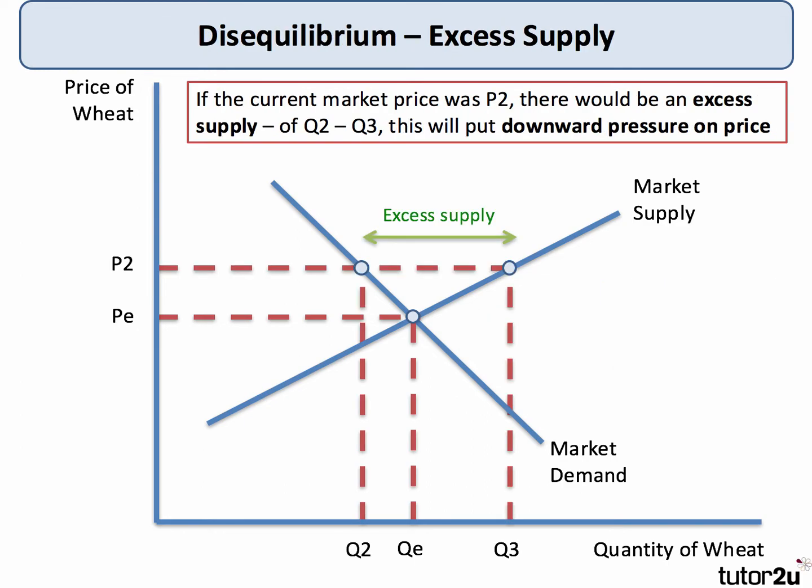Let's take an example of disequilibrium — excess supply. If the price in the market was P2, which is above the equilibrium, quantity supplied would be higher at Q3, as firms have an incentive to supply more when the price is greater. However, consumers would be less willing to buy and their demand would contract to Q2.